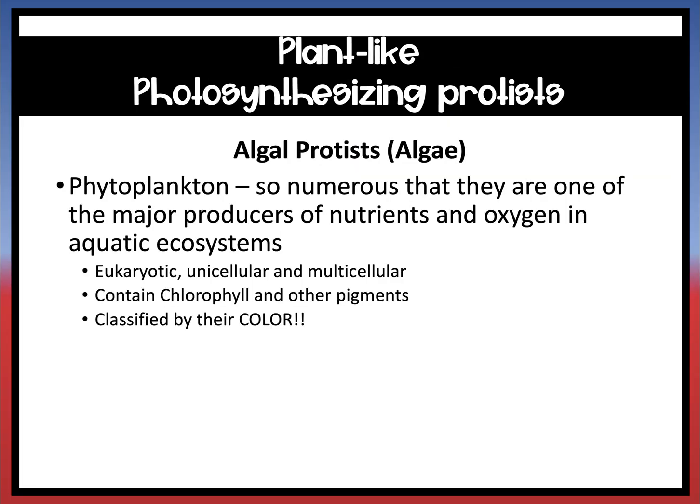The next group of protists are your plant-like protists, which photosynthesize. Algae is your biggest group, and another one is phytoplankton. They are the major producers of nutrients and oxygen in aquatic ecosystems. They are eukaryotic and can be unicellular or multicellular. They do have chlorophyll, the green pigment that helps with photosynthesis, but there are other pigments too — so they are classified by their color.